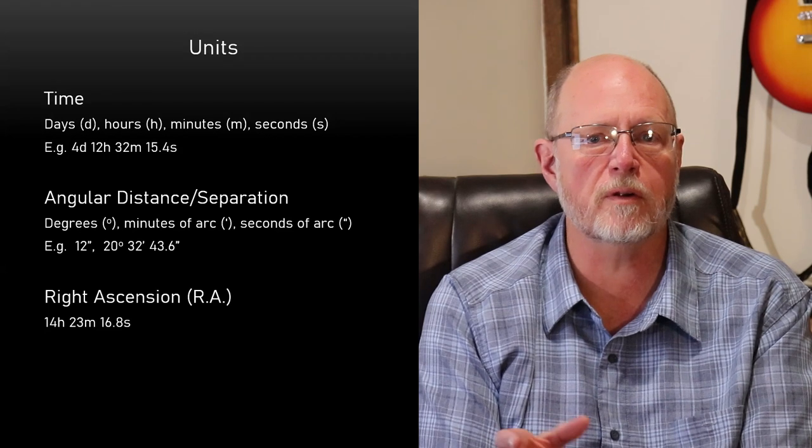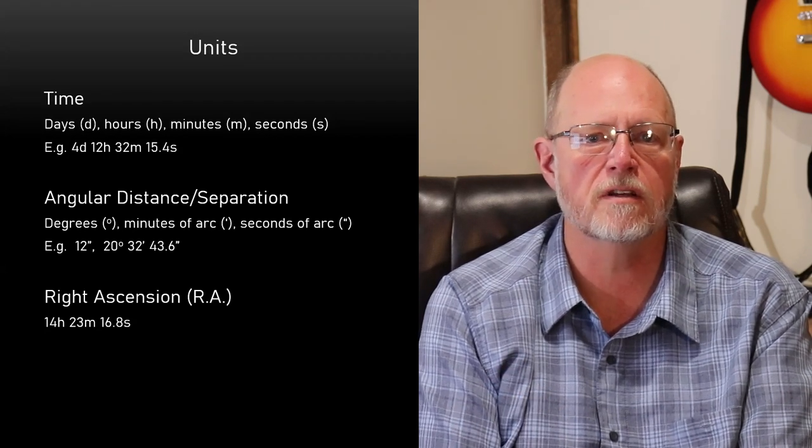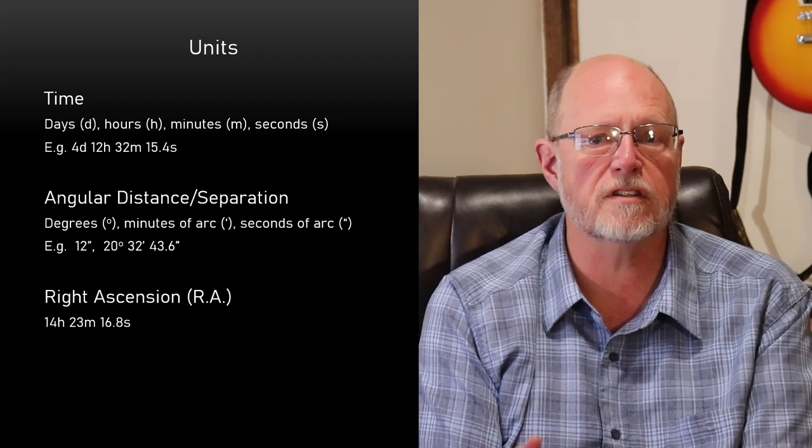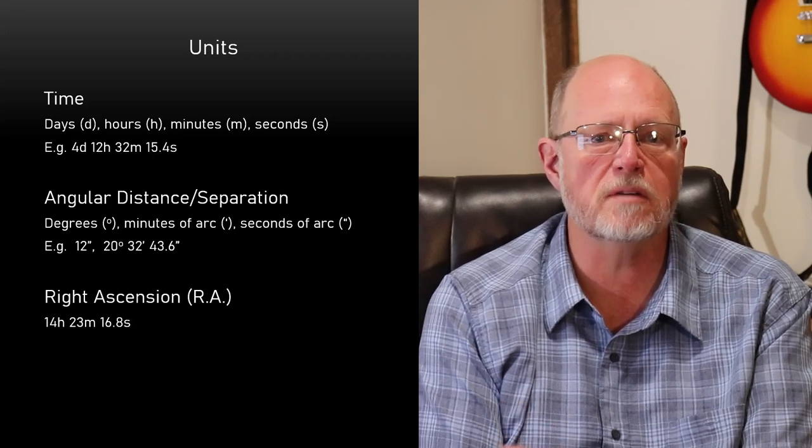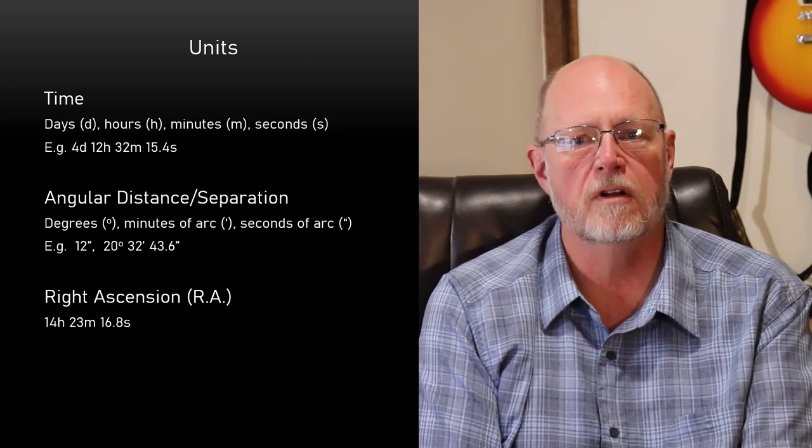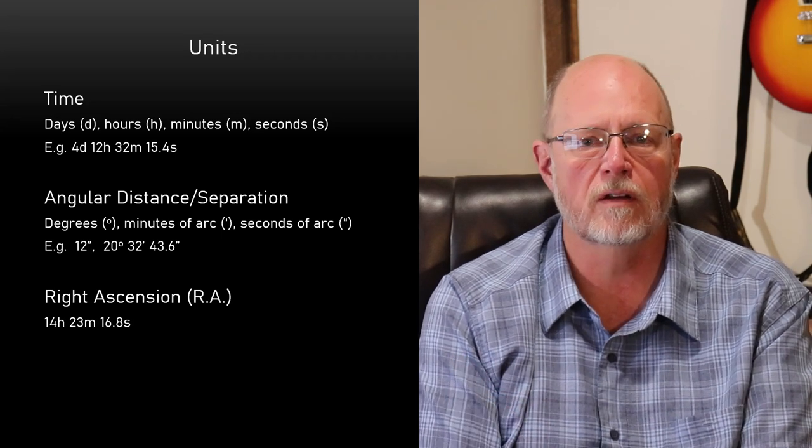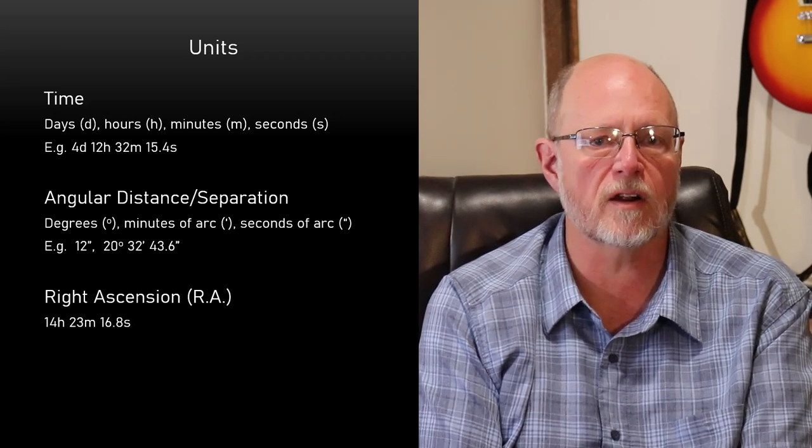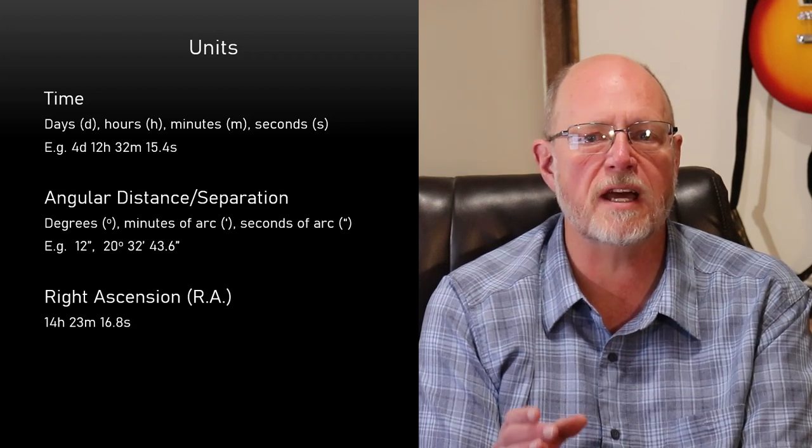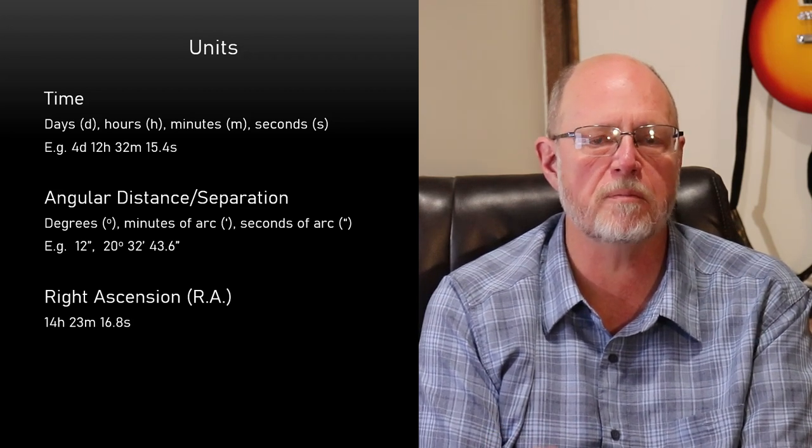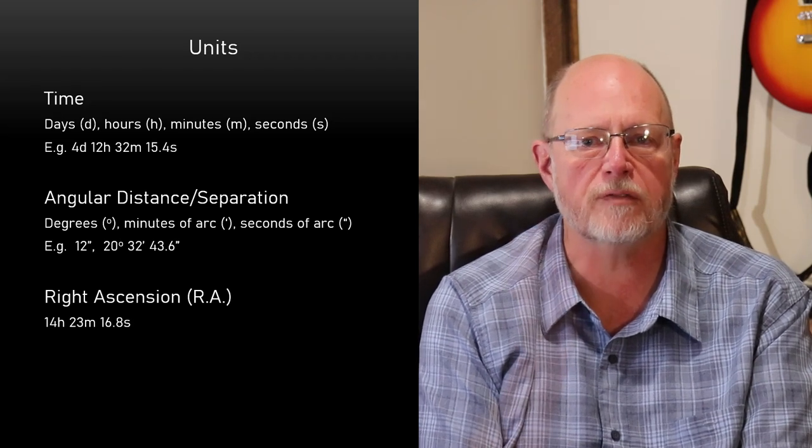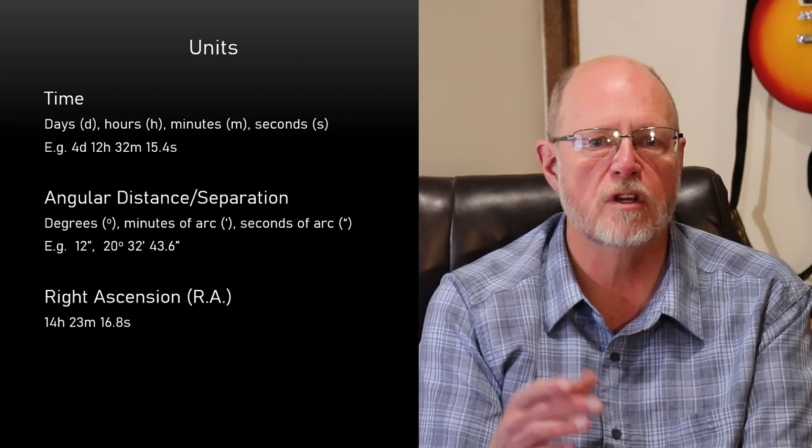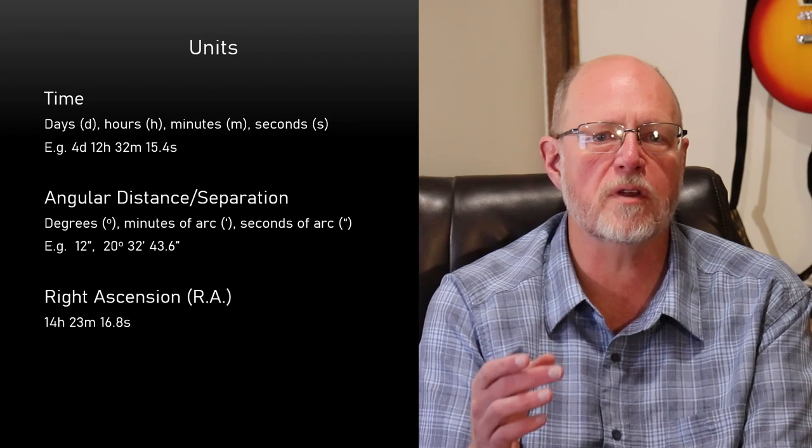A quick note about units. You're familiar with the units of time, days, hours, minutes, and seconds. These are abbreviated in SkyTools as D, H, M, and S. Angular distances, or separations, measured in the sky, have similar sounding units, but they're not related to time. These are actually angles, often called arc. The separation between two objects is measured in degrees, minutes of arc or arc minutes, and seconds of arc or arc seconds. Degrees are denoted by a degree symbol, minutes of arc by a single apostrophe, and seconds of arc by a double apostrophe. A separation between two stars could be written as 12 arc seconds, or even 20 degrees, 32 arc minutes, 43.6 arc seconds.